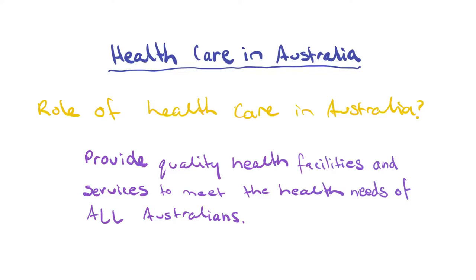In short, the role of health care in Australia is to provide quality health facilities and services to meet the health needs of all Australians. This is achieved through a combination of relationships between governments and public and private areas to provide quality health care facilities and services.